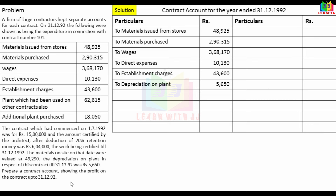On the credit side: material on site is valued at Rs 49,290. Work certified - cash received after 20% retention is Rs 6,04,000, which represents 80%. So work certified at 100% is Rs 6,04,000 into 100 divided by 80, which equals Rs 7,55,000.